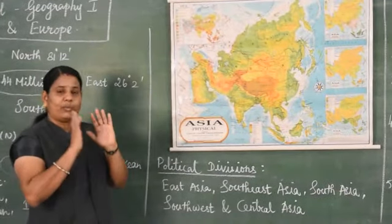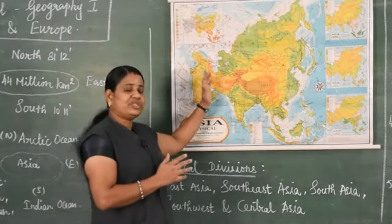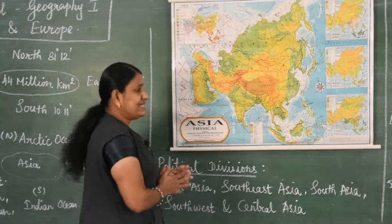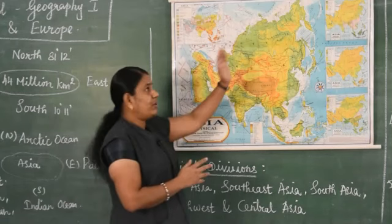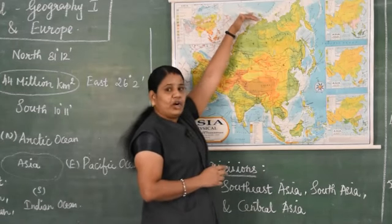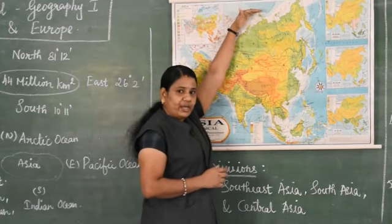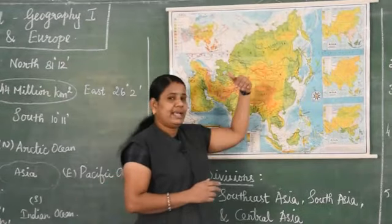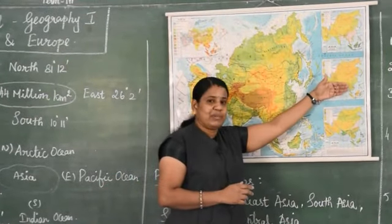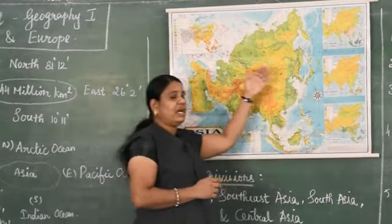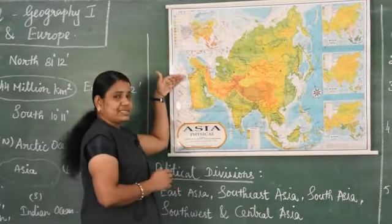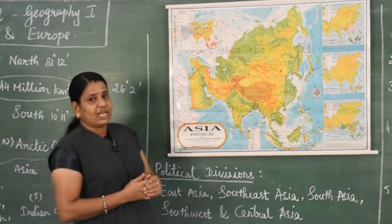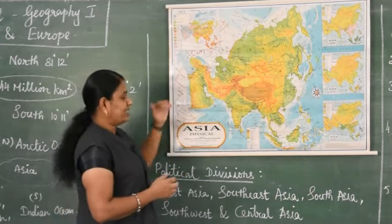So now we are very clear about the location and the boundaries. If we see the boundary one more time: north side - Arctic Ocean, south side - Indian Ocean, east side - Pacific Ocean, and the west side - many mountains and seas are located.